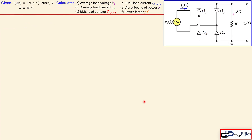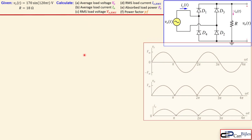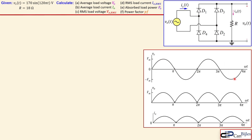Now let's jump to the actual example. We have the voltage source Vs given by 170 sin(120π t), a pure resistive load of 18 ohms, and we would like to calculate several parameters. Looking at the waveform: the input is a pure sine wave plotted vs. omega·t; Vo is the absolute value of the output load voltage; and the load current has the exact same shape but different units. For our calculations, we convert Vs from the time domain to the omega·t domain — Vm is 170 V and omega is 120π rad/s, which is 60 Hz.